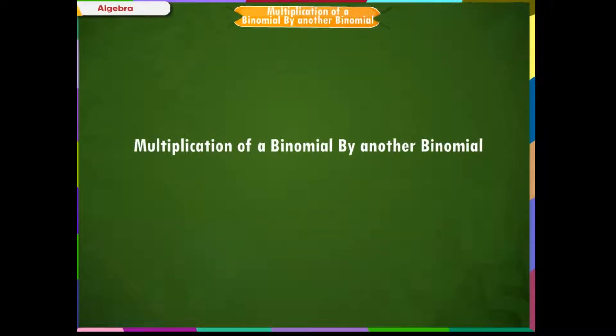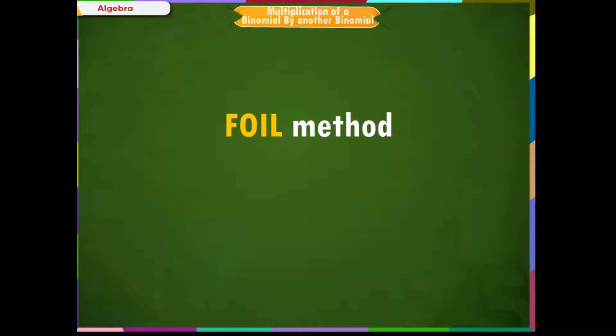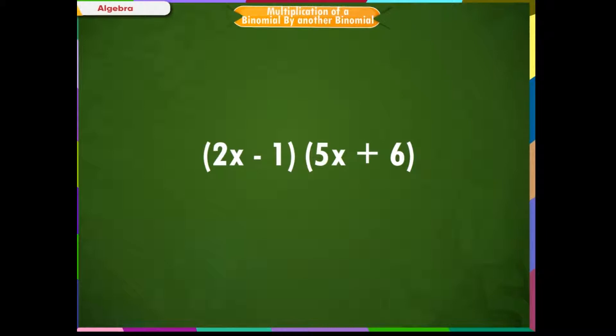Multiplication of a binomial by another binomial. We can use the FOIL method to multiply two binomials. Before we learn this method, let us understand the terms.